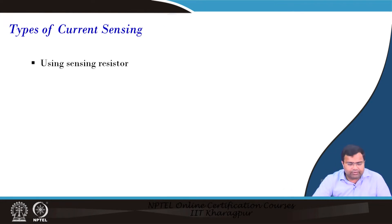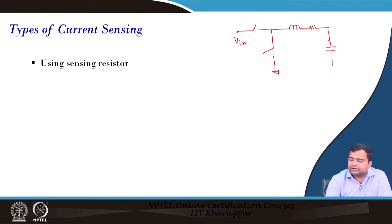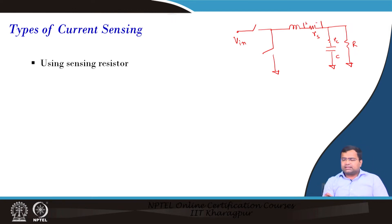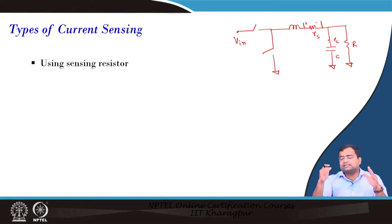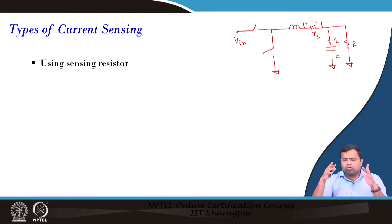Typically for current sensing, one technique is a sensing resistance. For example, in a buck converter we can put a sense resistance in series with the inductor, then use a capacitor. This allows sensing almost the full inductor current. However, the added sense resistance increases the effective equivalent resistance in the path, which increases conduction losses and reduces voltage gain.